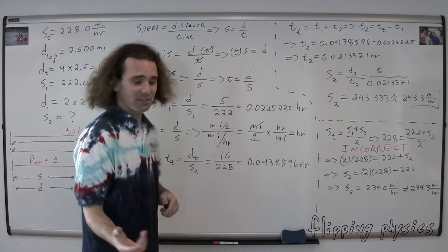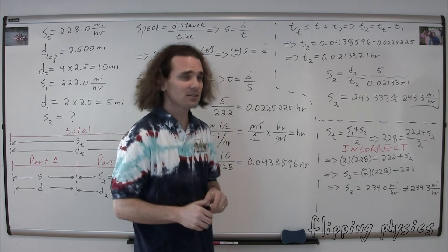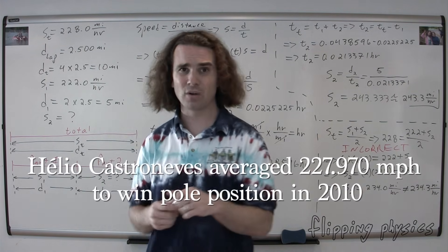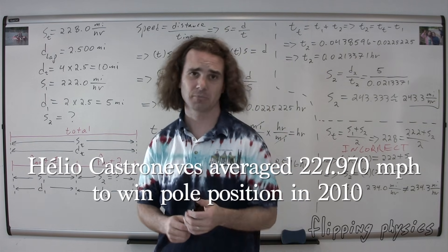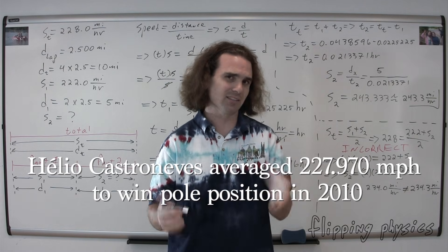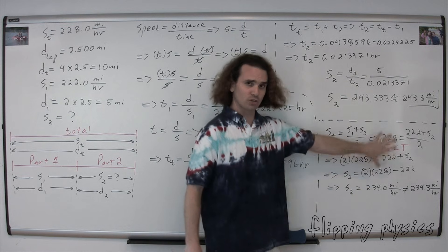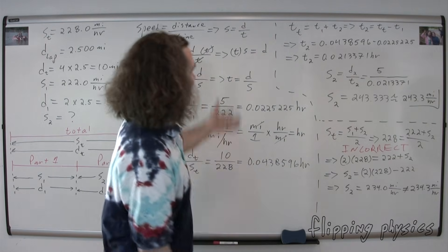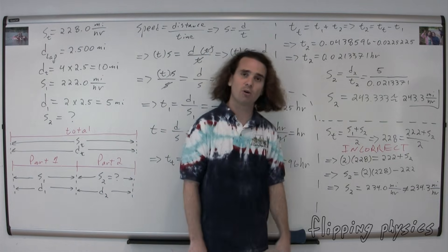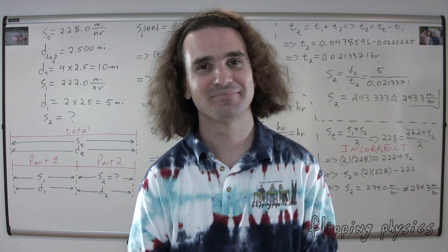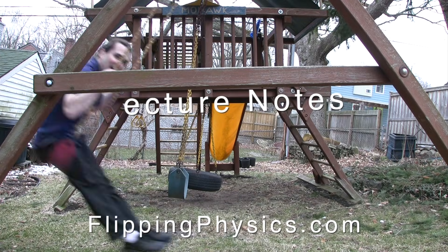Speaking of sig figs, I have to confess that Helio Castroneves in 2010 in the Indy 500 actually qualified for pole position with a speed of 227.970 miles per hour. They actually figure out their average speeds to six sig figs, which makes sense. I cut it down to four sig figs so it would be easier to show that the simple averaging method is incorrect, which is an important piece. That was my example problem figuring out the average speed necessary to qualify for pole position. Lecture notes are available at FlippingPhysics.com. Please enjoy lecture notes responsibly.